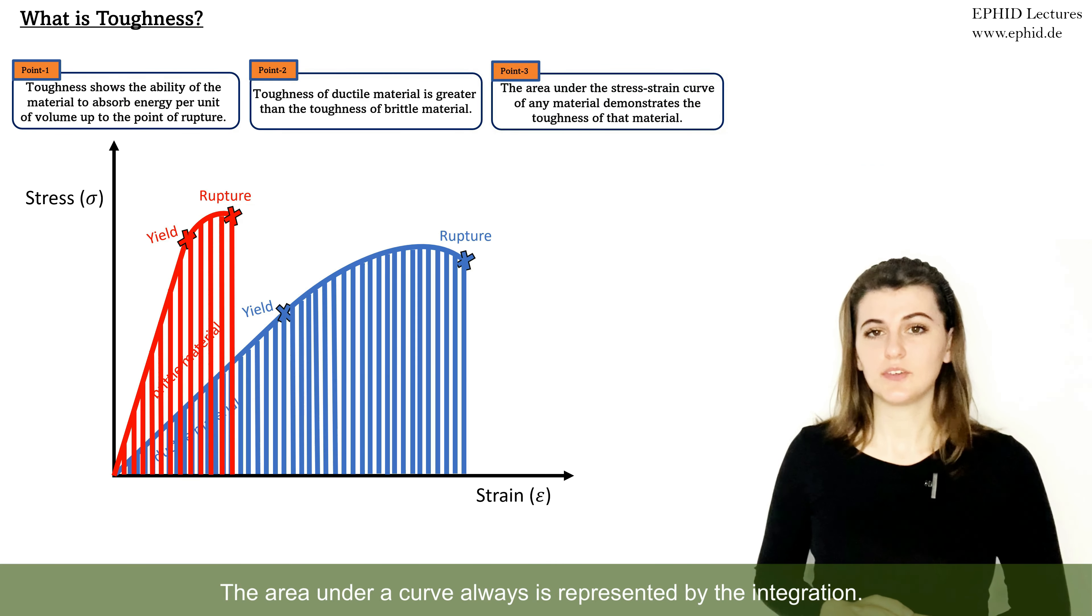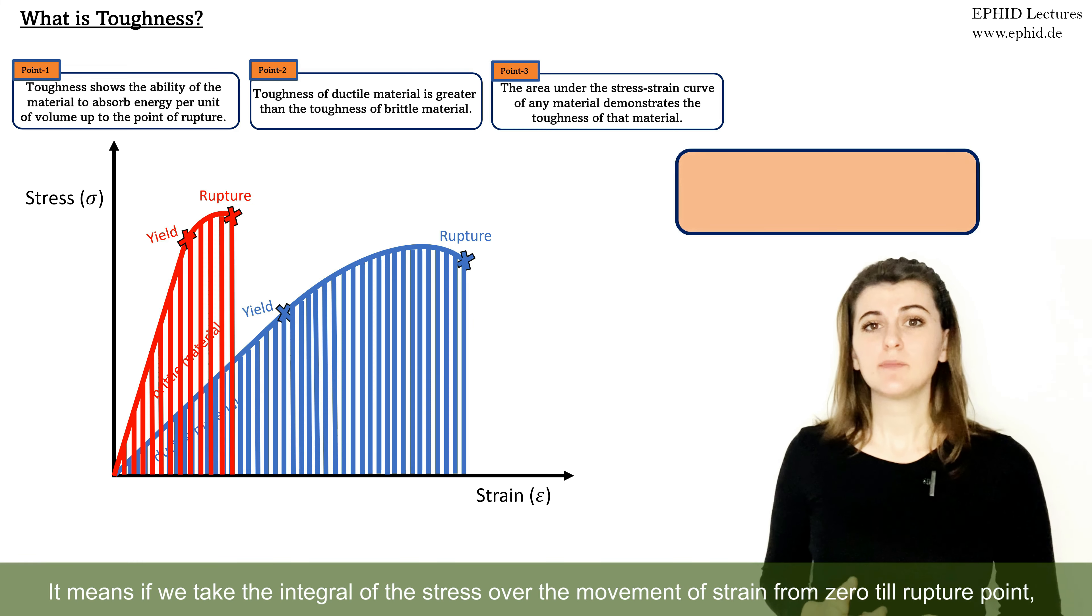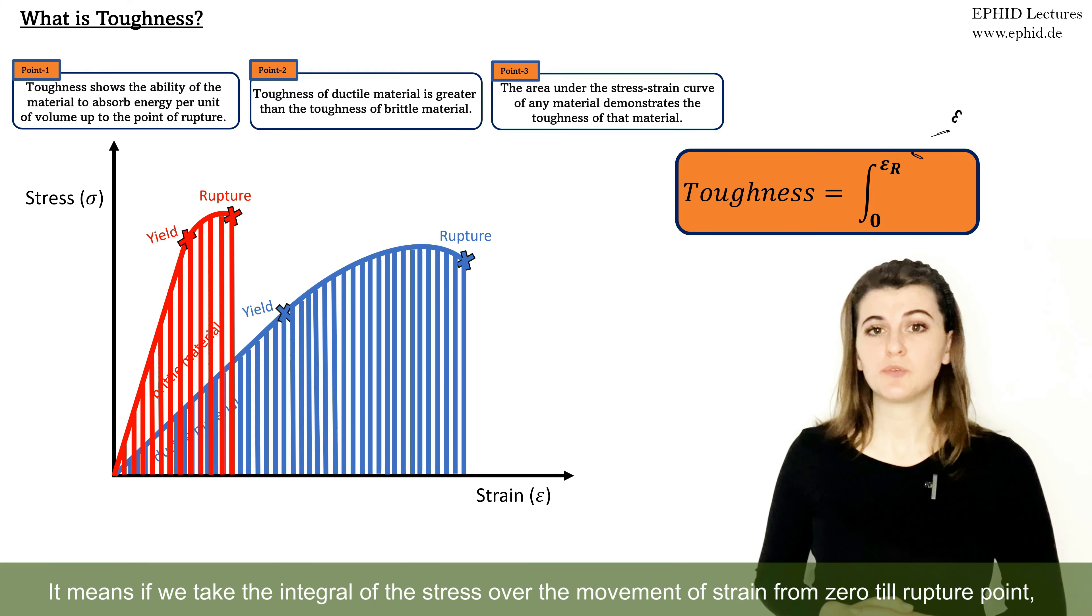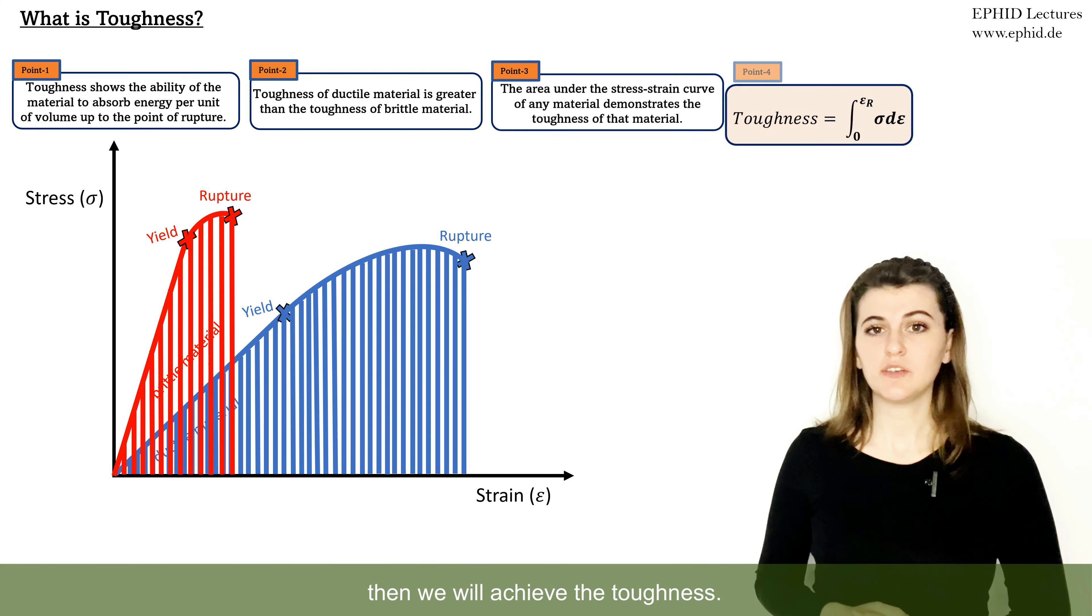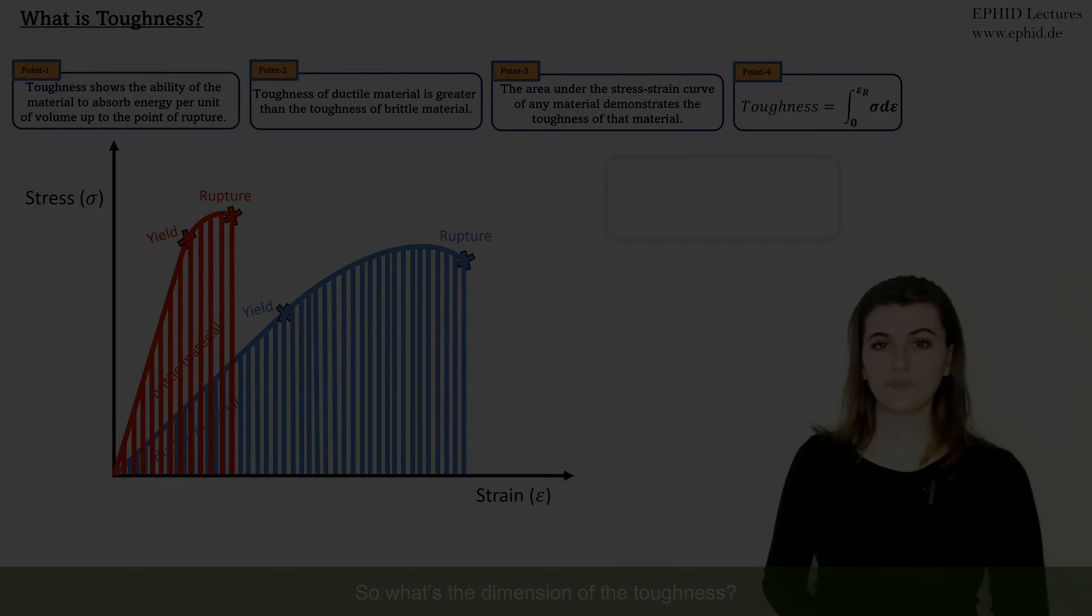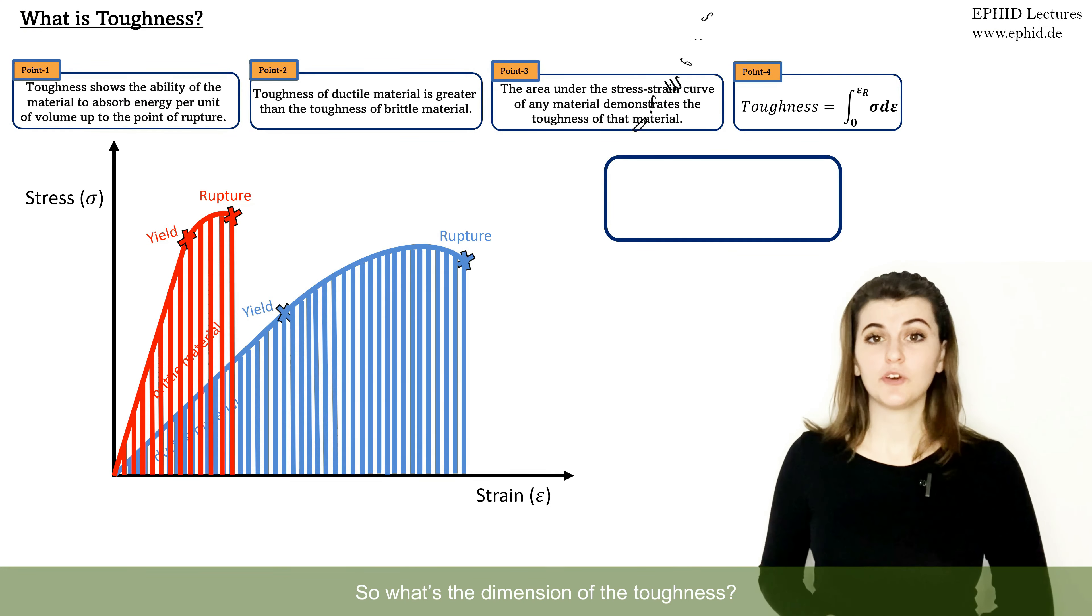The area under a curve is always represented by integration. It means if we take the integral of the stress over strain from zero to rupture point, then we will achieve the toughness. So what's the dimension of toughness?